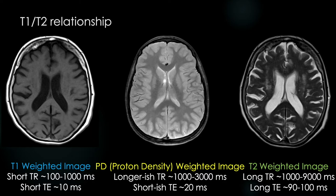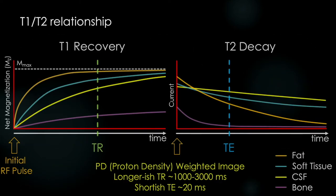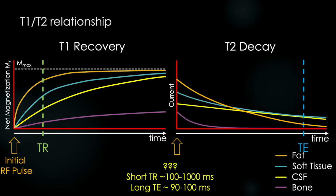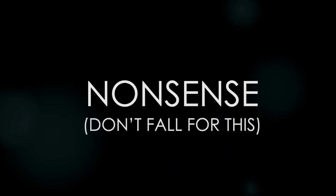Maybe we'll do a lecture just on pulse sequences in the future. Here's a question: there's one combination we haven't tried — what if we choose a short TR and a long TE? What kind of image weighting will this produce? This is nonsense, a common piece of trickery for board exams. Don't give them the satisfaction of falling for this. Remember that TE should always be significantly shorter than TR.